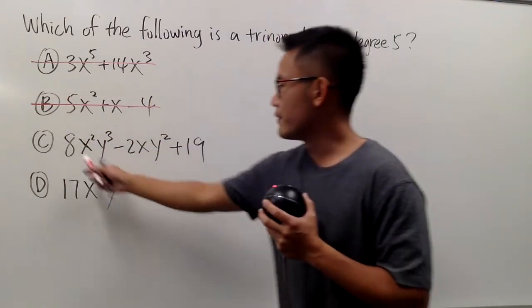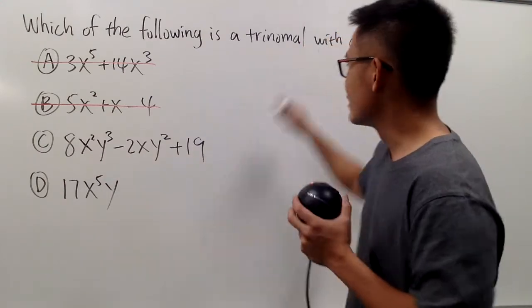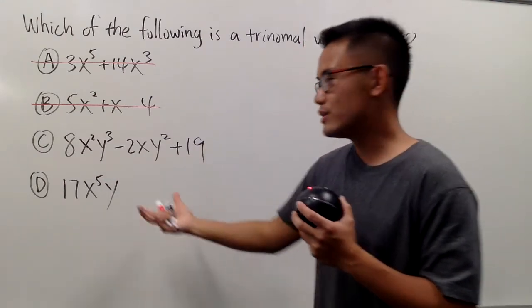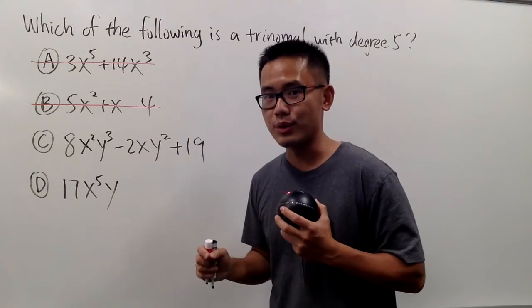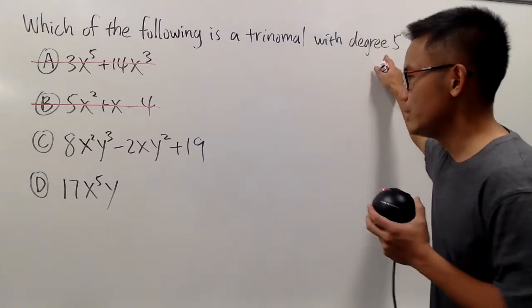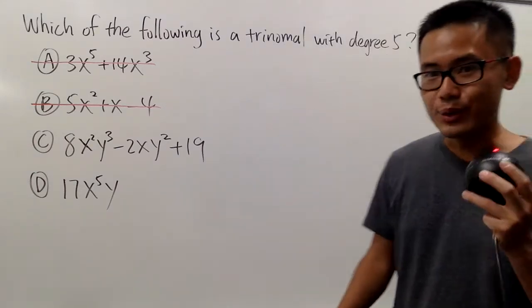Next, we have 1, 2, 3. Three terms, so it is a trinomial, even though it has x and y, but it's a trinomial as well. Do we have degree 5 from here? This is how we do it, remember?